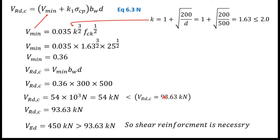Since VRdc = 93.63 kN is greater than the minimum value of 54 kN, we use VRdc = 93.63 kN. However, VEd = 450 kN is greater than VRdc = 93.63 kN, so shear reinforcement is necessary.